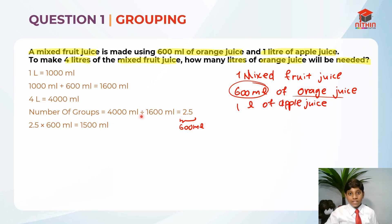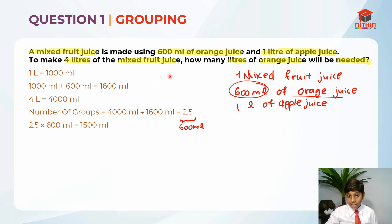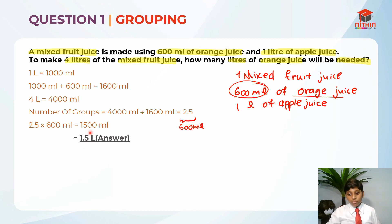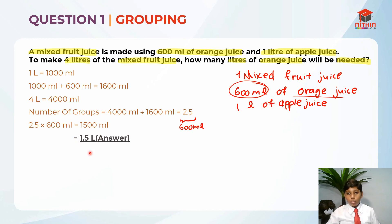So this is the answer — but it's not the final answer yet, because they are asking us to find the answer in liters. So we need to convert ml to liters. To convert from ml to liters, it is divided by 1000. That is why we get 1.5 liters. So this is the answer for question 1.